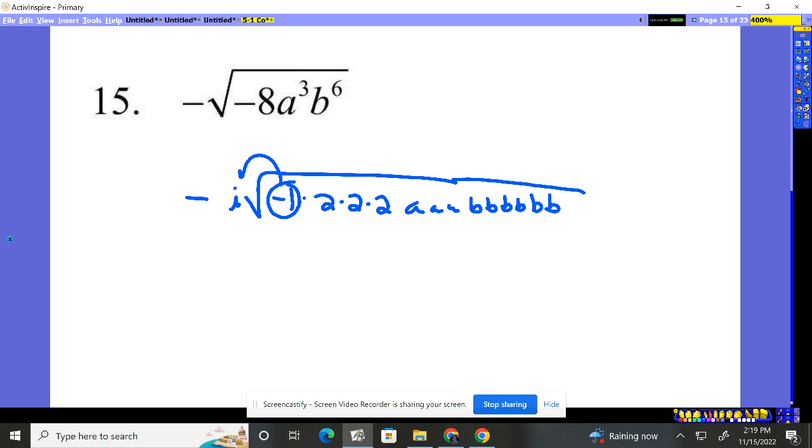Negative 1 comes out as an i. A 2 is going to come out, so we'll end up with a negative 2 out there because there's a negative sign already there. An A is coming out. A B, another B, another B. So how many is that coming out? B cubed.